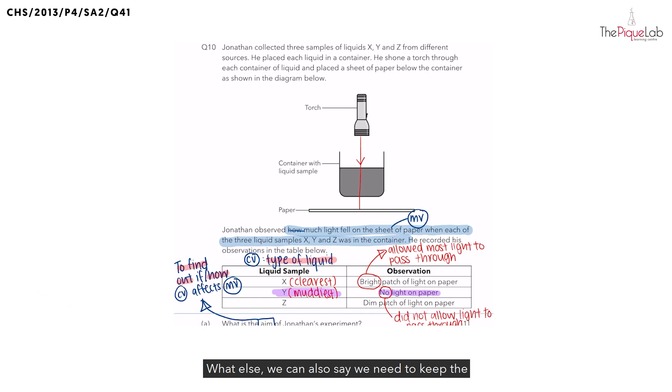Even the size of the container or the transparency of the container should also be kept constant. Or some students could even say that the distance between the torch and the liquid or the distance between the liquid and the paper should also be kept the same. Because these variables, if different, would also affect the result of the experiment, which is the amount of light that falls on the sheet of paper.